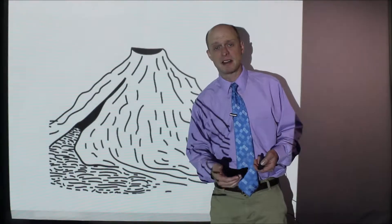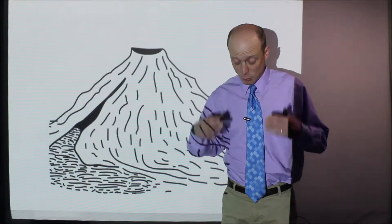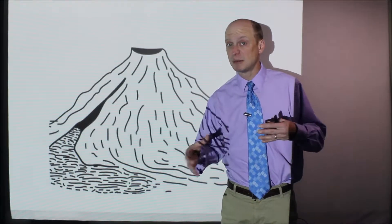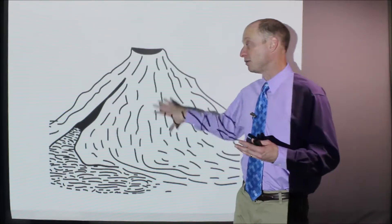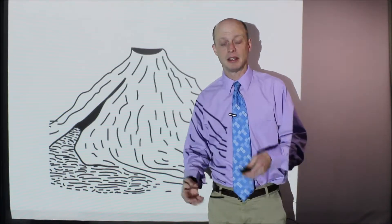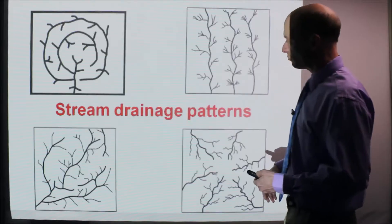And with stream drainage patterns, it means if you were overhead, like what would the shape of the streams and rivers in this area? What would they look like? Because they're going to be caused by the shape of the land because the water flows downhill. So that's what I mean by stream drainage patterns.